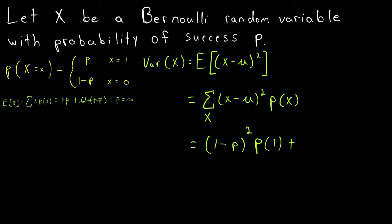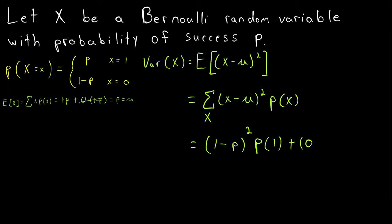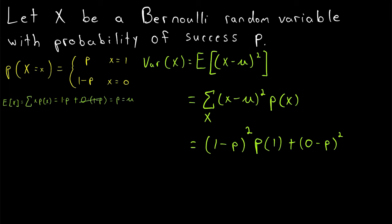The only other possibility is when x equals 0, in which case (x minus mu) squared is (0 minus p) squared, which equals p squared. The probability that (x minus mu) squared equals p squared is the probability that x equals 0, written as P(0).